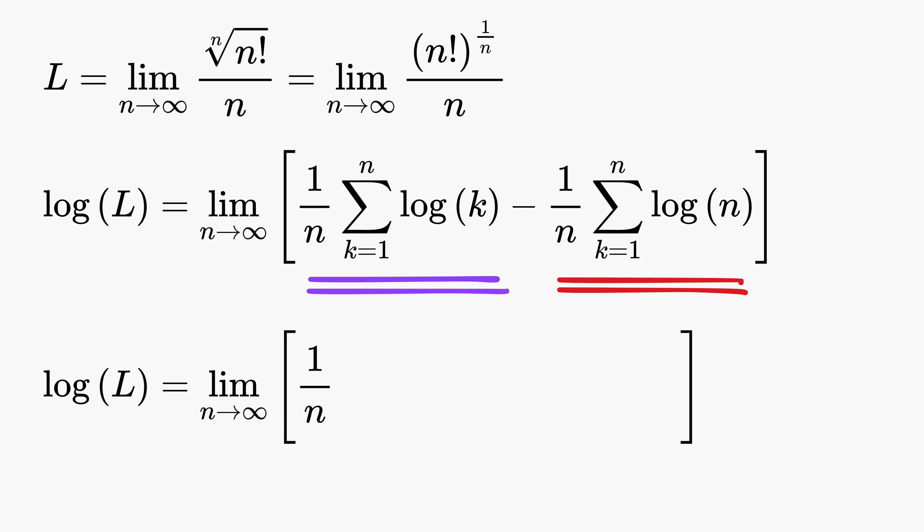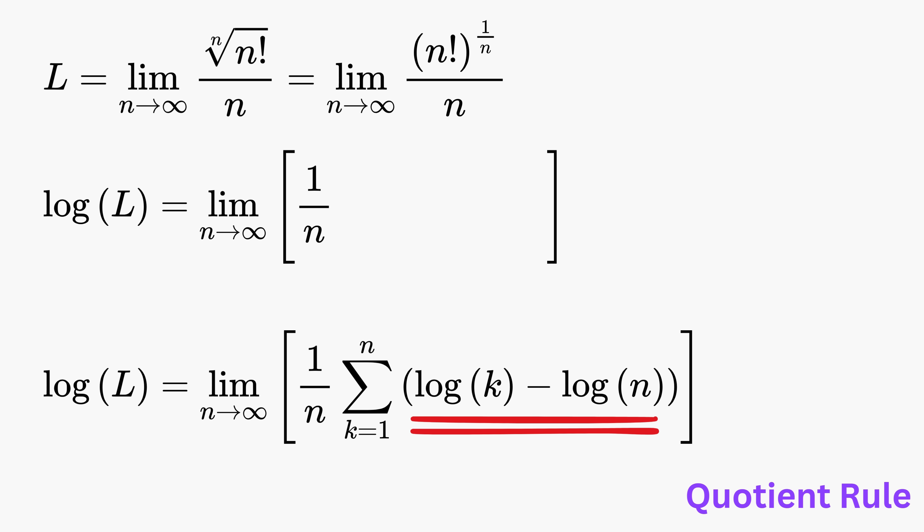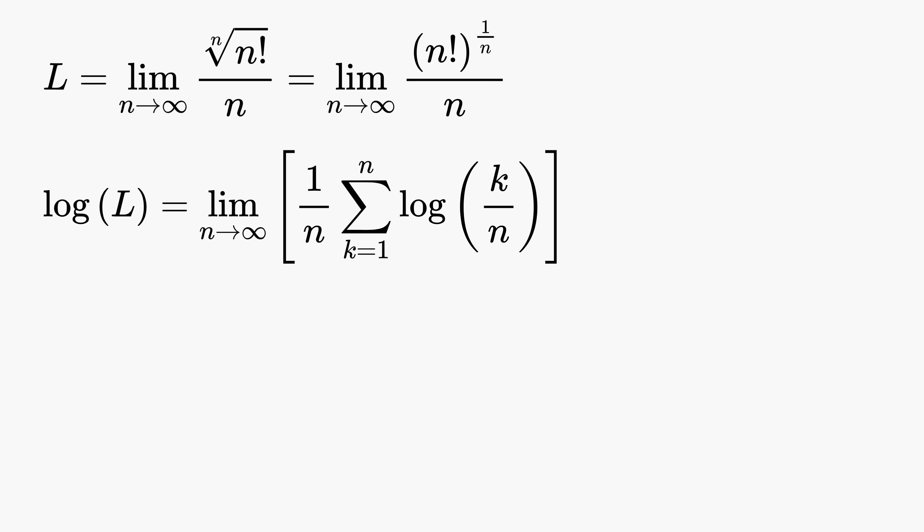Factoring out 1/n gives us the sum of the difference between two logarithms. Using the logarithm quotient rule once again, the difference of logs becomes 1/n times summation of k equals 1 to n of log(k/n).